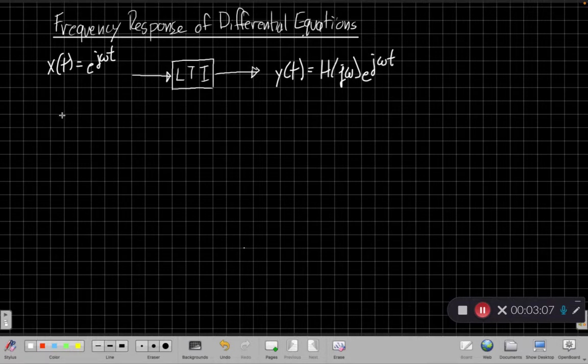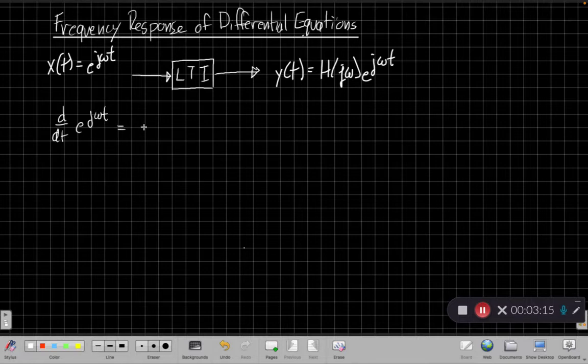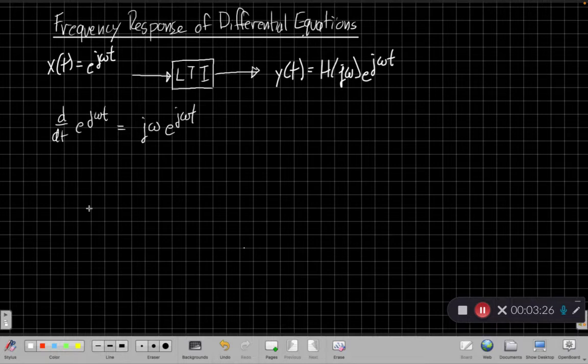And then the second piece that we're going to use here is that if we take a derivative of this complex exponential, as we're going to need to do in differential equations, we get still the same complex exponential back out scaled by jω. In fact, taking the derivative is an example of an LTI system, and we'll talk more about that later this semester.